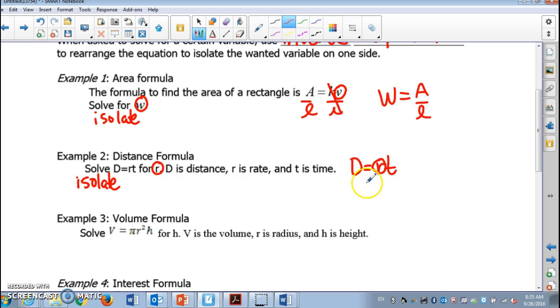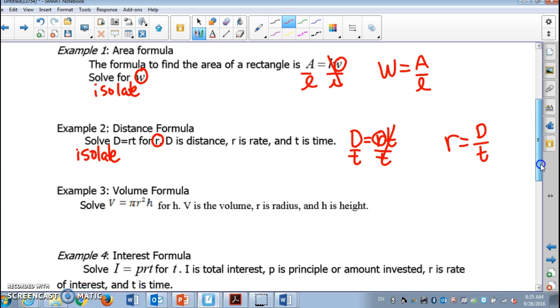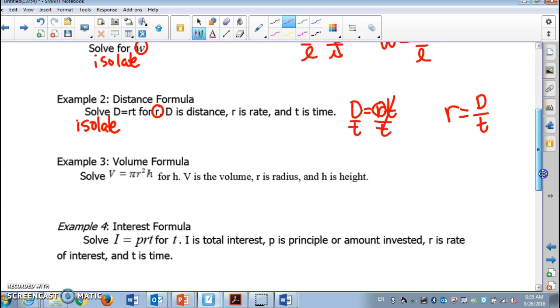We're gonna divide by T from both sides. T and T cancels out, so R will be equal to D over T. Is it getting easier? Let's move on.